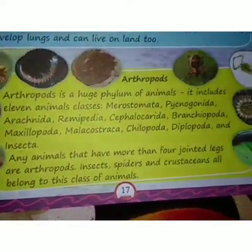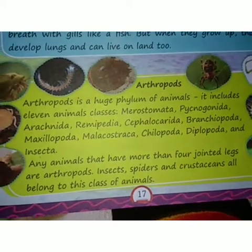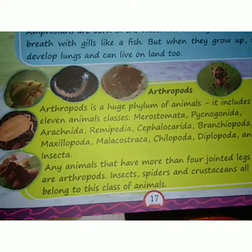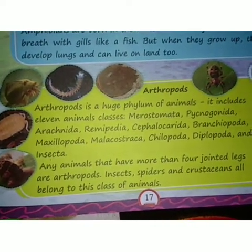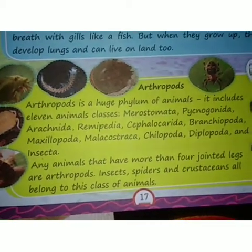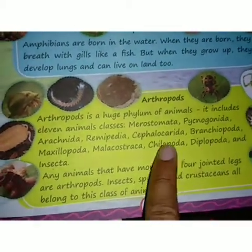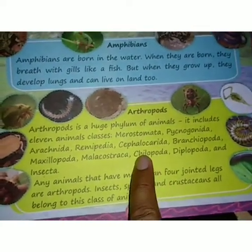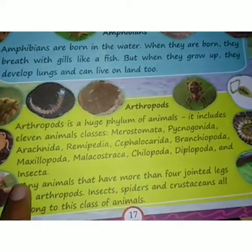The 11 classes of Arthropods are: Merostomata, Pycnogonida, Arachnida, Remipedia, Cephalocarida, Malacostraca, Branchiopoda, Maxillopoda, Diplopoda, and Insecta.